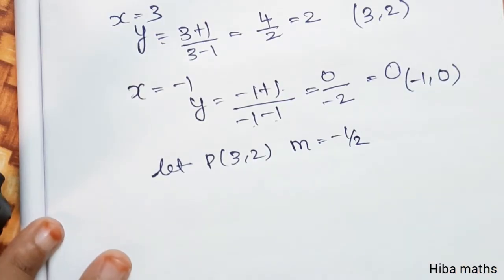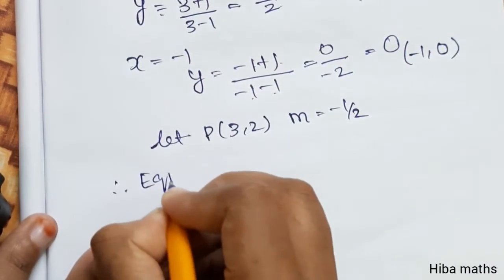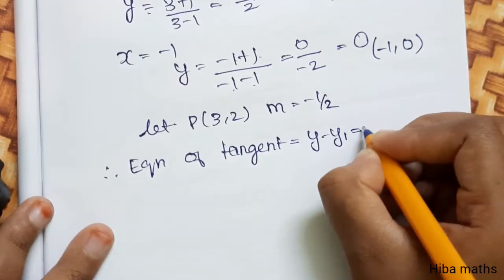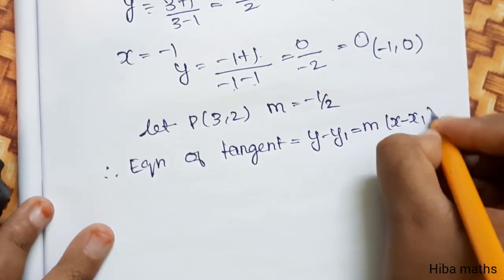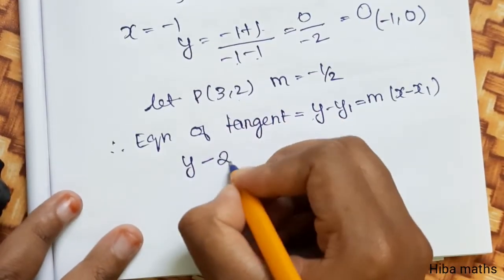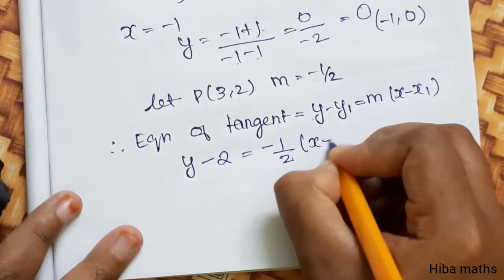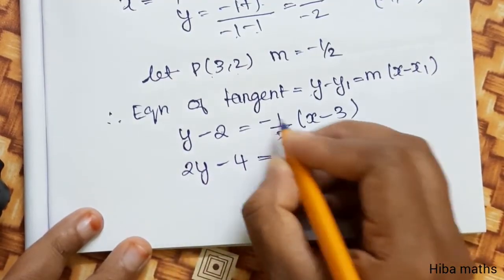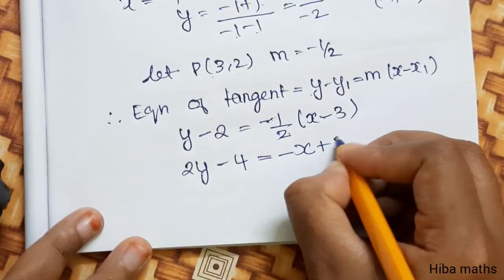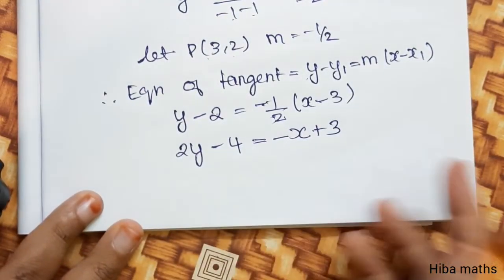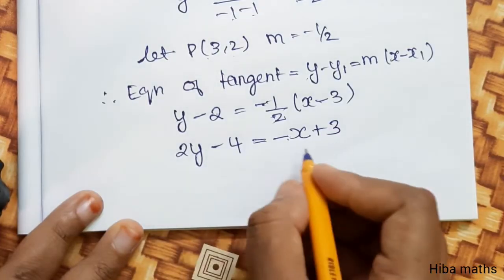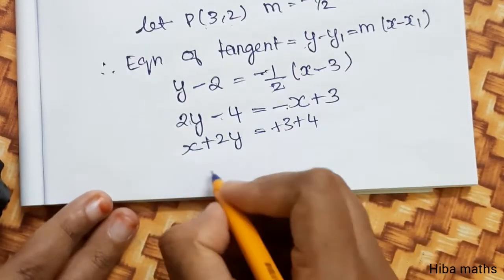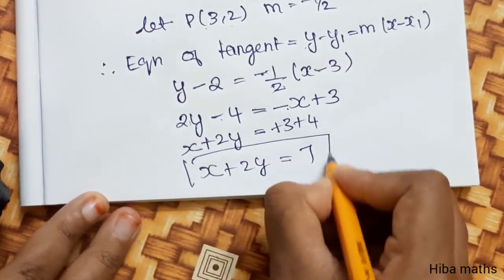So the first point is (3, 2) with slope m equals −1/2. Using the equation of the tangent: y minus y1 equals m times (x minus x1), so y minus 2 equals −1/2 times (x minus 3). Multiplying through by 2: 2y minus 4 equals −x plus 3, which gives x plus 2y equals 7. This is the first tangent equation.